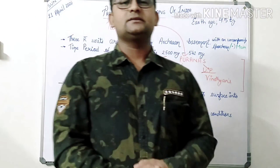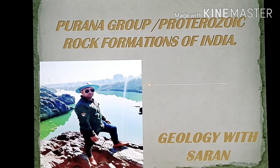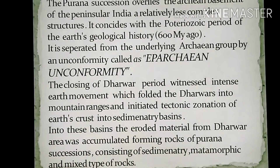Today we will be dealing with the Purana group or Proterozoic successions of India. The Purana succession overlies the Archean basement of the peninsula of India and is of relatively less complex structure. It coincides with the Proterozoic period of earth's geological history. It is separated from the underlying Archean group by an unconformity known as the Eparchean unconformity, also known as the Main unconformity.